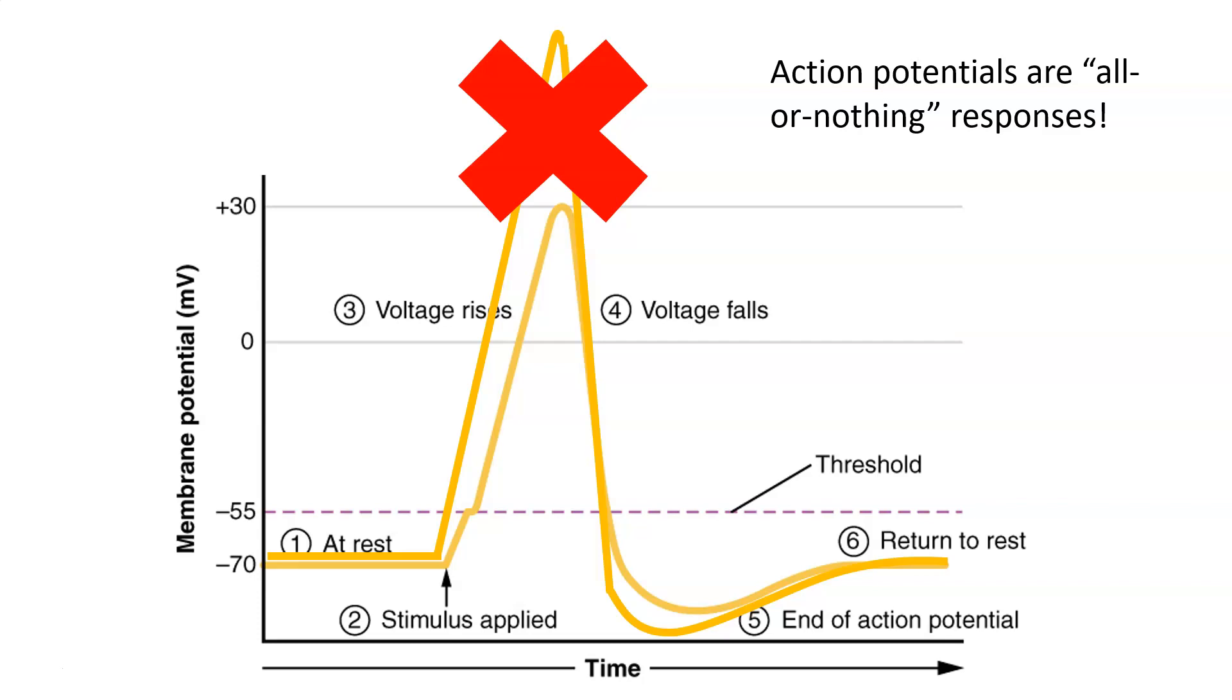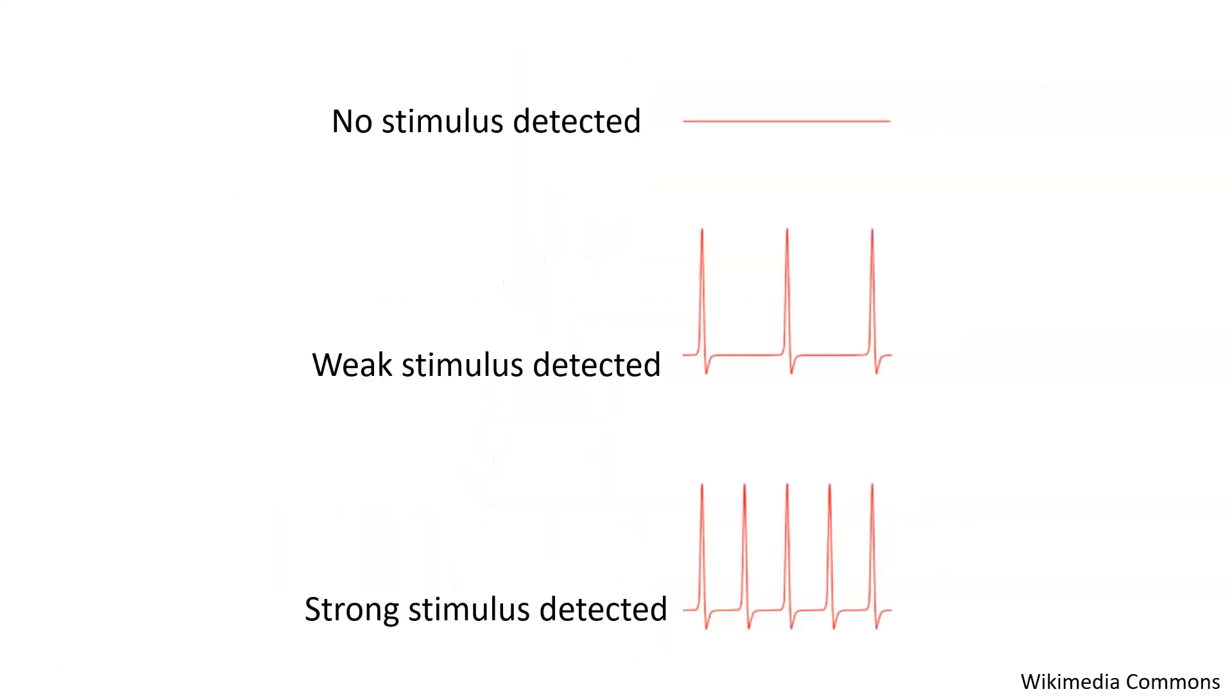We get the same depolarization every single time. So then, how do neurons signal intensity of a signal? It turns out that signal intensity is transmitted through frequency.